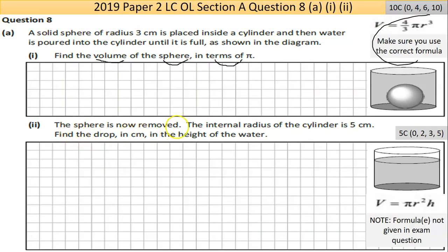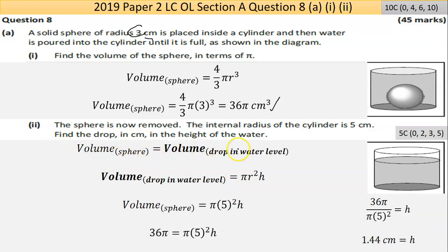Now Part 2 says the sphere is removed, so the volume is going to go down. That's what the second diagram is showing. The internal radius of the cylinder is 5 centimeters. Find the drop in centimeters in the height of the water. The volume of this section is the same as the volume of the sphere.